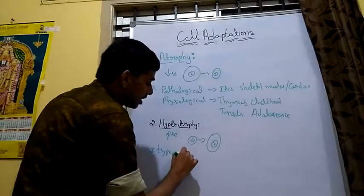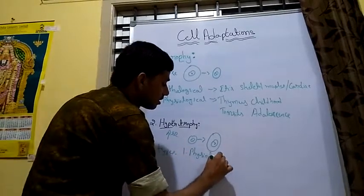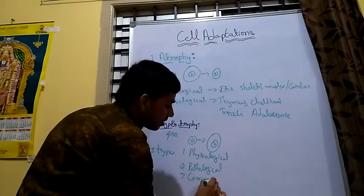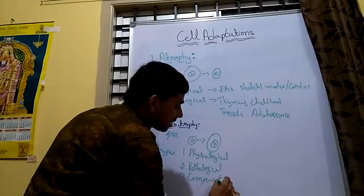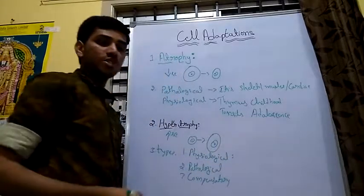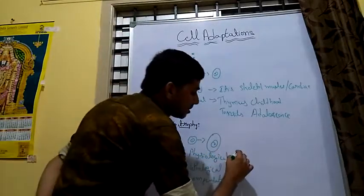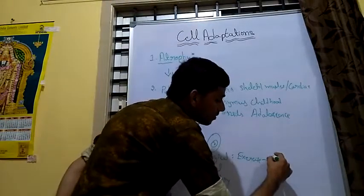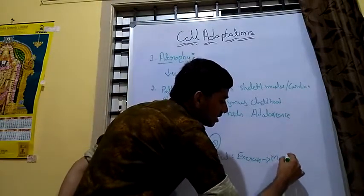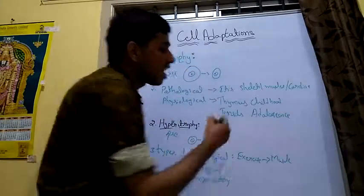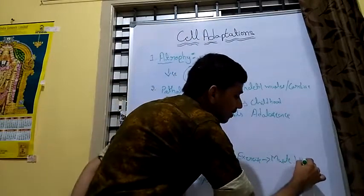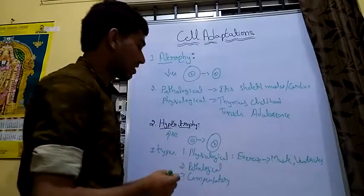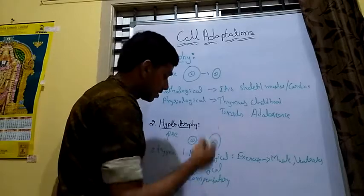The three types are: physiological, pathological, and compensatory. Physiological hypertrophy is especially seen in exercise — it leads to an increase in hypertrophy of the muscles, particularly skeletal muscles and the ventricles of the heart, cardiac muscles, due to increased exercise or increased workload.